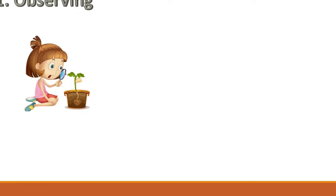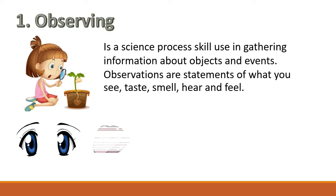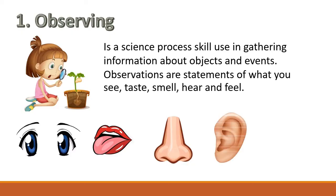As you progress in age and grade level, you become skillful in the use of different basic science processes to learn about things. When you were in your lower years, you were asked to observe several familiar things around you. You learned that observing is a science process skill used in gathering information about objects and events. Observations are statements of what you see, taste, smell, hear, and feel. Here are some examples of observations using your five senses.